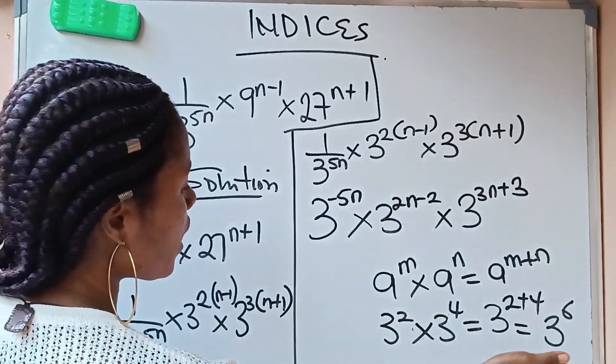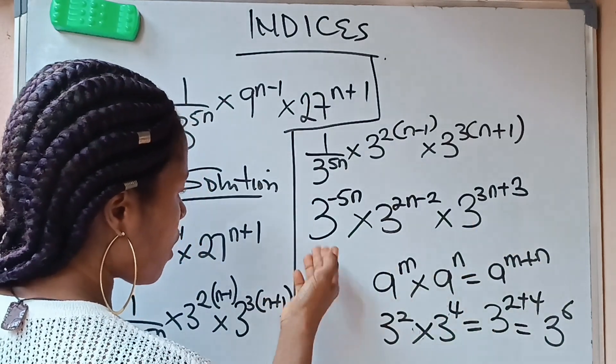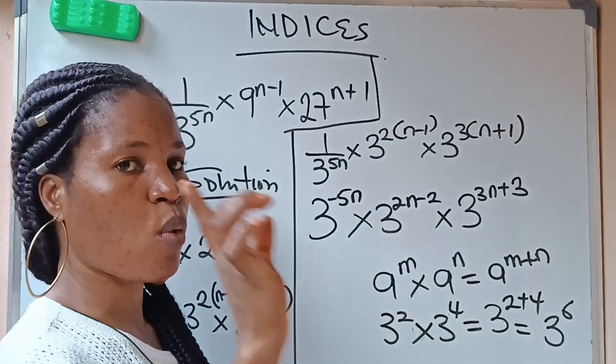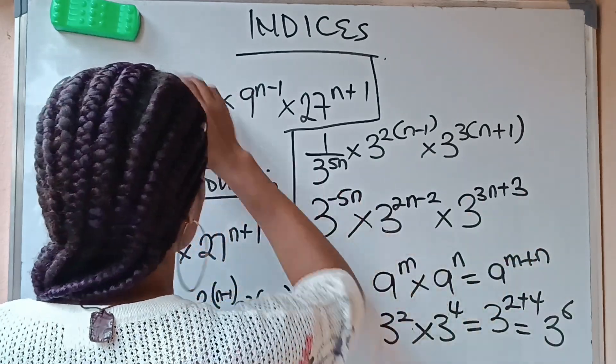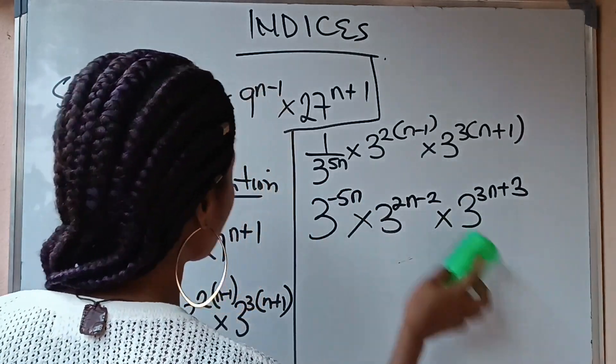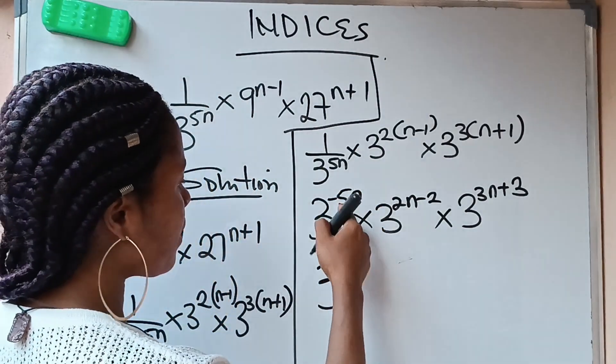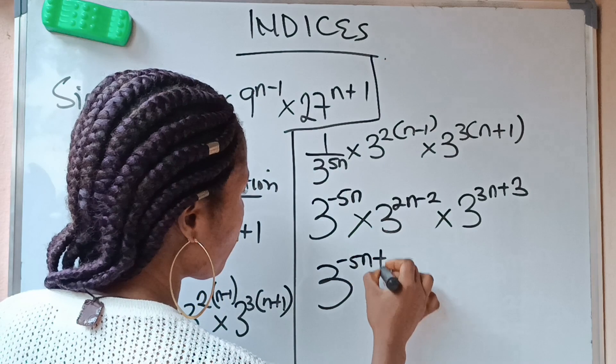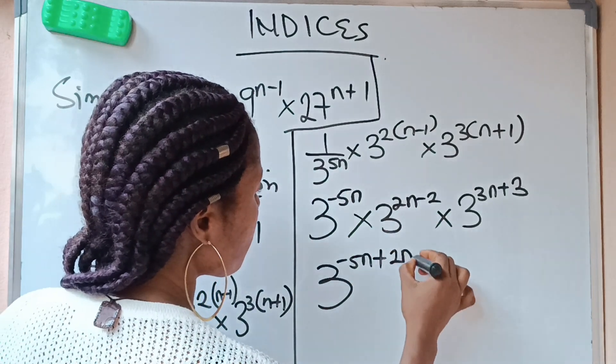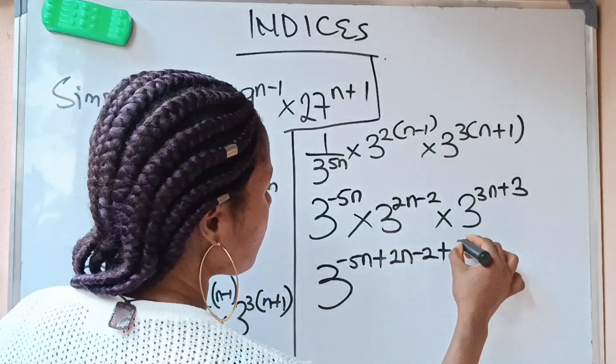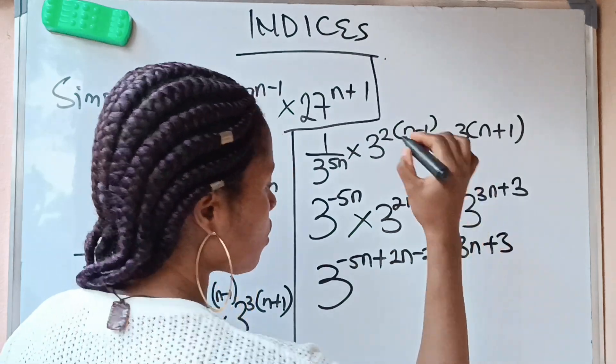So we are going to relate this now to what we have here. We have 3, 3, 3. So we are going to pick one 3 and we are going to add their powers. Now watch me do that. So we are going to pick one 3, which is this. Let me add the powers: minus 5n plus 2n minus 2 plus 3n plus 3.